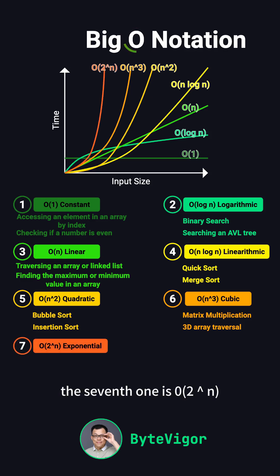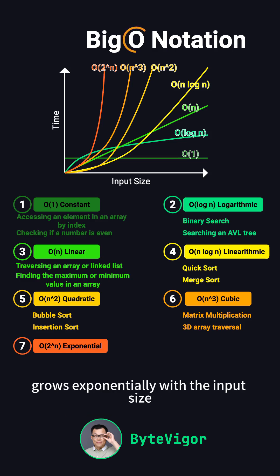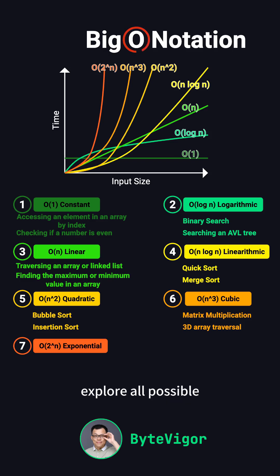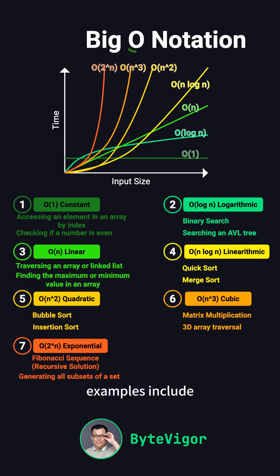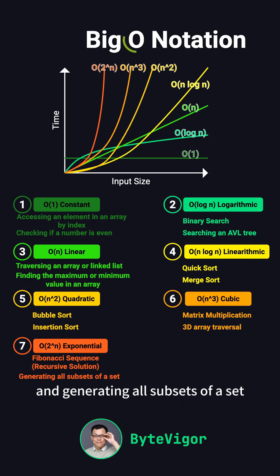The seventh one is O(2^n), or exponential time complexity. This means the execution time grows exponentially with the input size. You'll often see this in algorithms that need to explore all possible subsets or combinations. Examples include the recursive solution for the Fibonacci sequence and generating all subsets of a set.